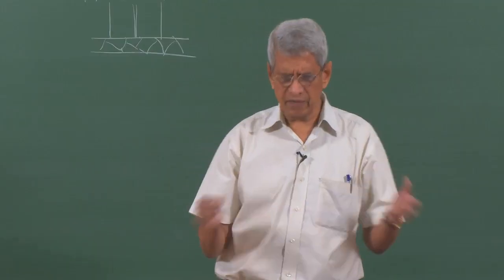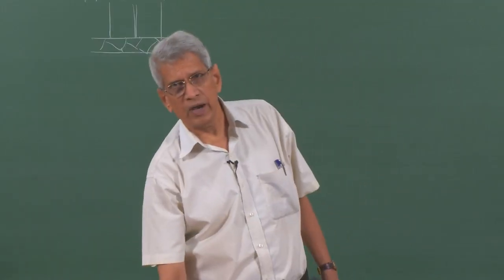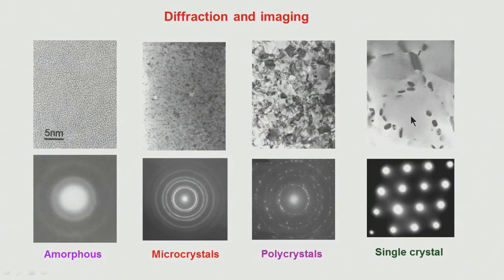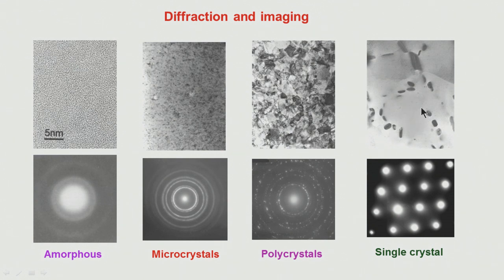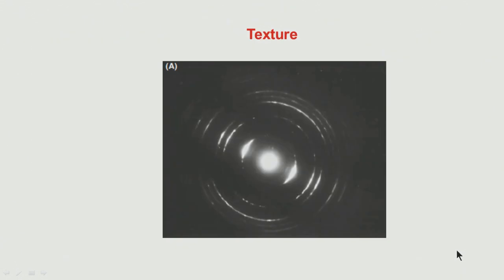In many materials the grain sizes are very large, perhaps 1 to 100 microns. In such cases we can get information from each grain individually by controlling the beam size, obtaining single-crystal information from a spot diffraction pattern. This pattern, shown here, corresponds to a diffraction pattern taken from a specific matrix region of an FCC structure. How to analyse and index this pattern is the subject of today's talk.